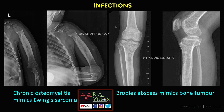Infections such as chronic osteomyelitis can mimic even sarcoma, and Brodie's abscess can also mimic bone tumors.